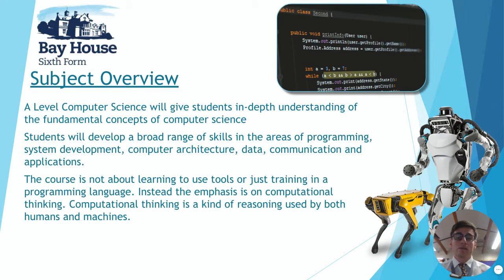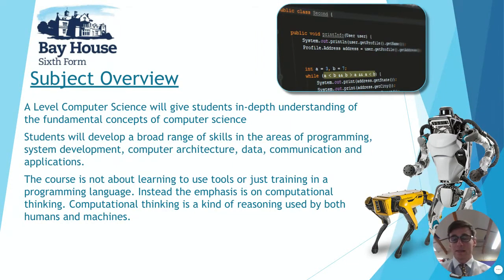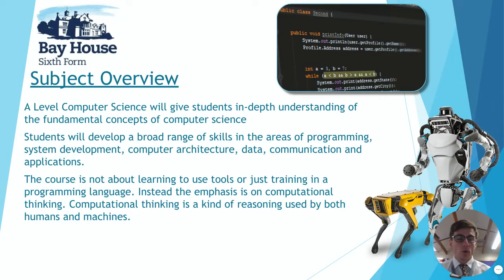Firstly, an overview of the different components. You'll be expected to cover quite a broad range of topics that come under the umbrella of computer science. Some of them you might expect, and some you might be less familiar with and less likely to think of as computer science. You'll cover programming, system development, computer architecture, data communication, and applications — your core computer science topics.